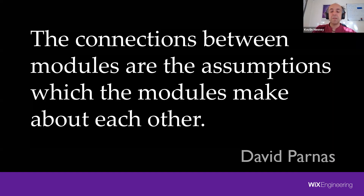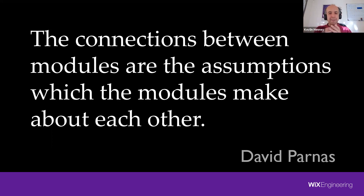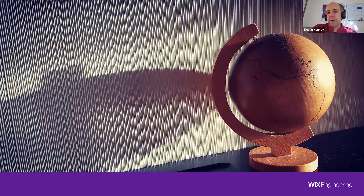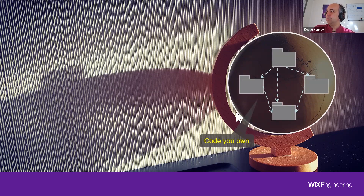David Parnas said in 1971: 'Connections between modules are the assumptions which modules make about each other.' He's not just talking about the visible dependencies our tools can show us — this class uses this class, this module imports that module — but also many invisible dependencies, particularly those related to third parties and assumptions.